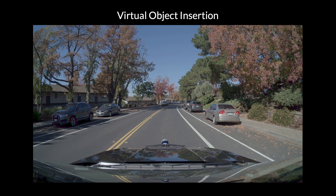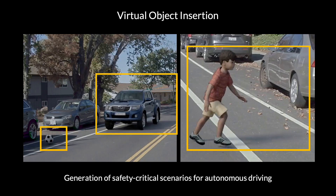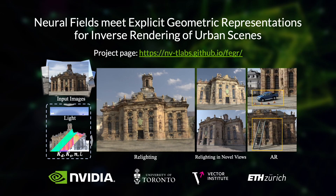Reconstructed scenes can also be populated with synthetic or AI-generated objects where physics can be applied. Photorealistic object insertion into the reconstructed scenes provides a way for synthetic data generation at scale. Please refer to our paper for more details.